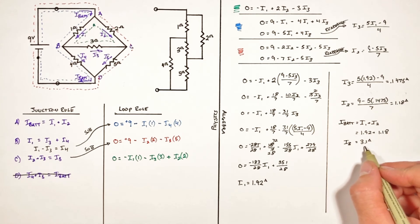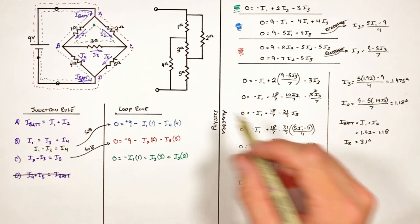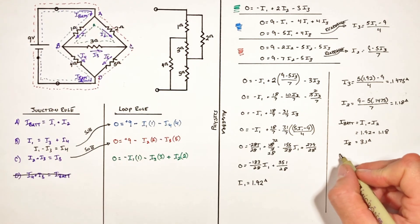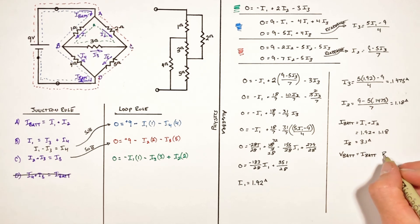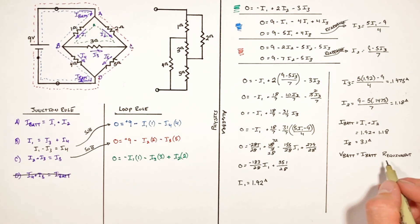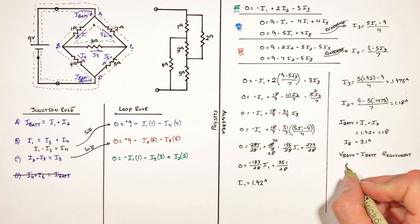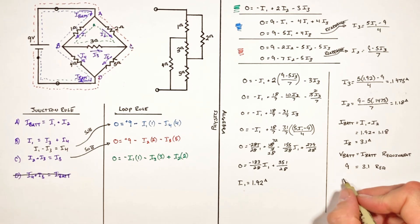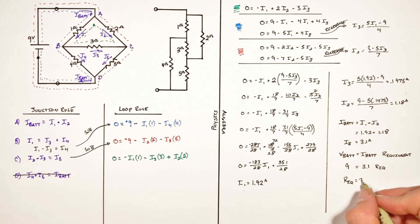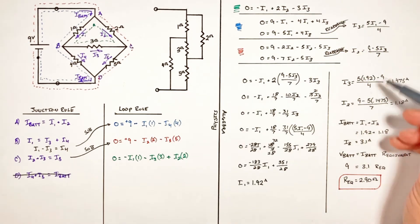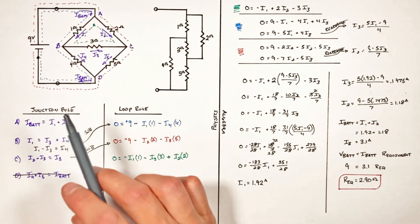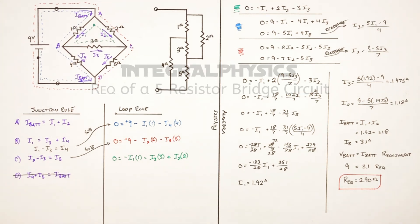Knowing both I1 and I2, the current out of the battery is I1 + I2 = 3.1 amps. Applying Ohm's law to the entire circuit: 9 volts = 3.1 amps × R_eq. That gives us the equivalent resistance of this five-resistor bridge circuit. I hope you found both the physics and the algebra useful — that's all for now.